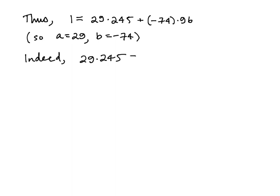Of course, I always worry that I've done something weird with my arithmetic, so I did actually check this. 29 times 245 is 7105. Negative 74 times 96 is negative 7104. And so when I add these together, I do indeed get 1.